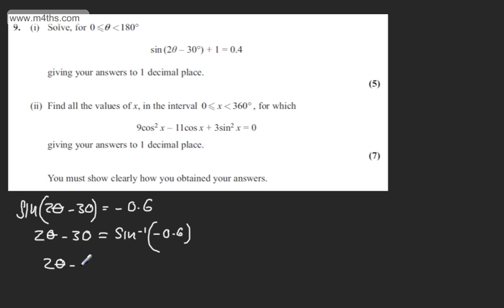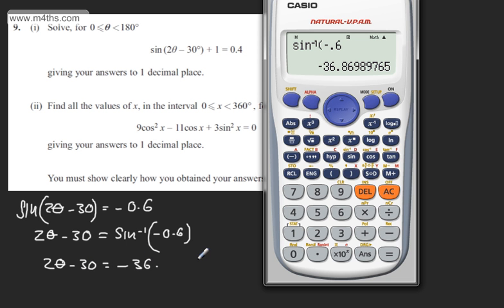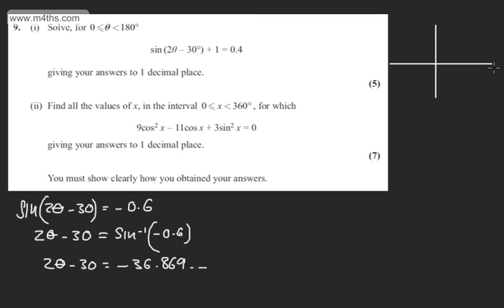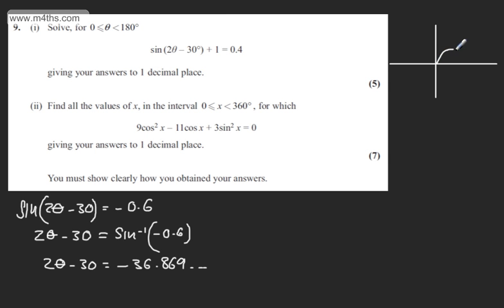So at this stage we can say 2 theta minus 30 degrees is equal to minus 36.869 and so on. Where we go from here is entirely up to us. I am going to consider the sine curve. What I have done is found a principal value, and that is a negative principal value. We know the sine curve cycles, and the first value that we found is negative. I can now consider one the same distance forward from minus 180, or do a full cycle to pick up positive values.